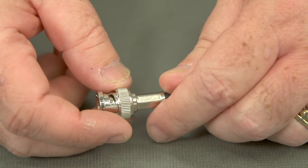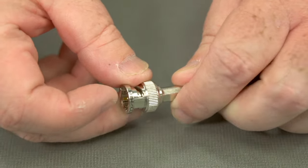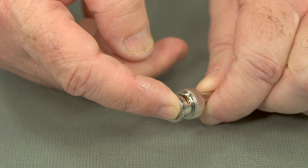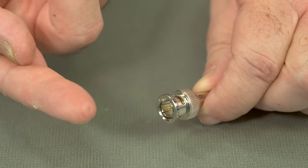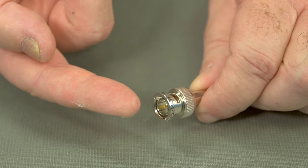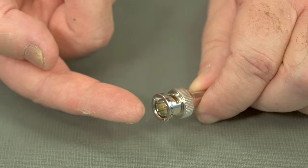Some things to look for. First of all, is the center pin through far enough? Let's give it a push with our finger and make sure that it makes an indentation on our finger. That's an indication that the center pin is indeed far enough through.